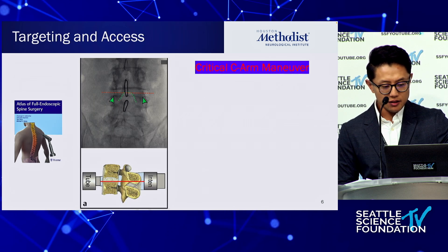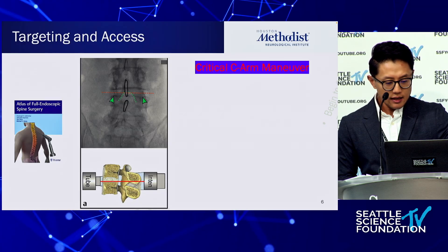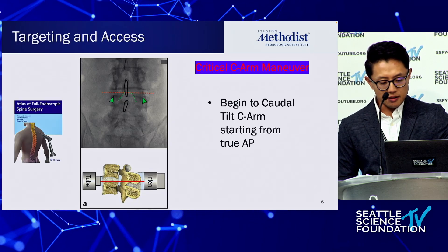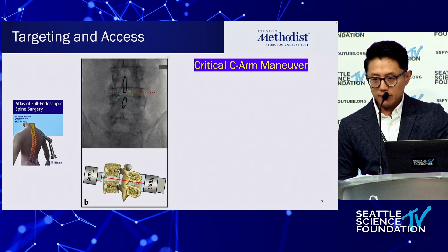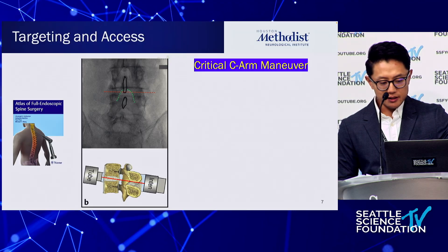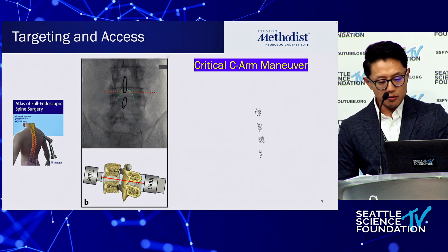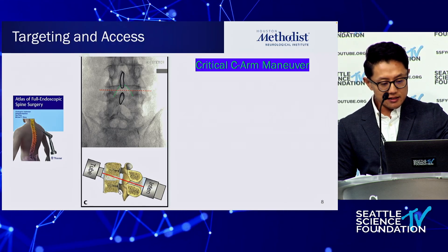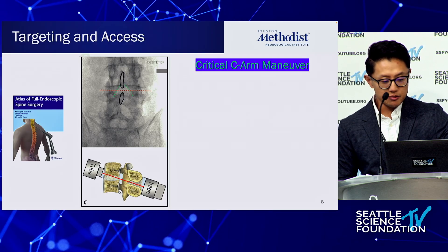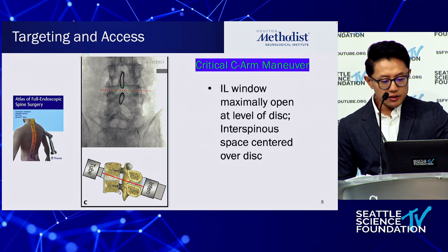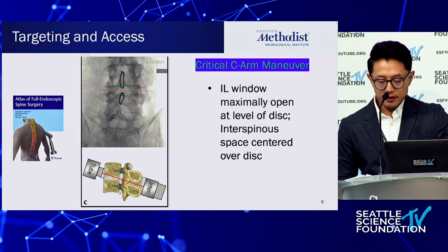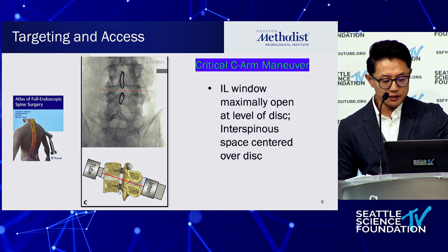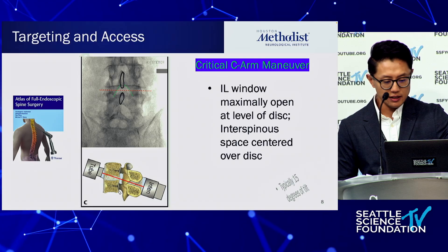The one difference is a critical C-arm maneuver. If you tilt the C-arm, you'll start to open up the interlaminar window over the disc space. What you're trying to do is open up the window so you're directly looking at the disc with less lamina to drill through. When the window is maximally open, you should see the bisection of the interspinous processes.